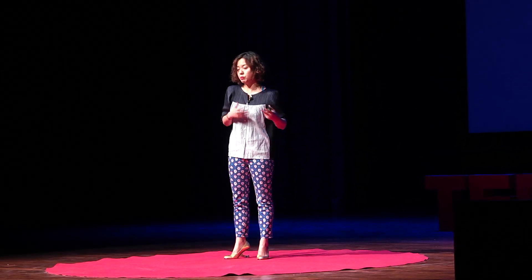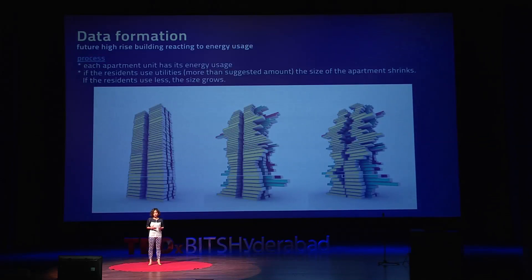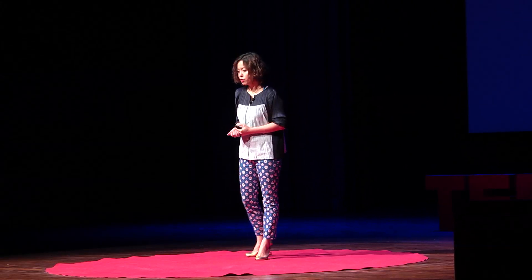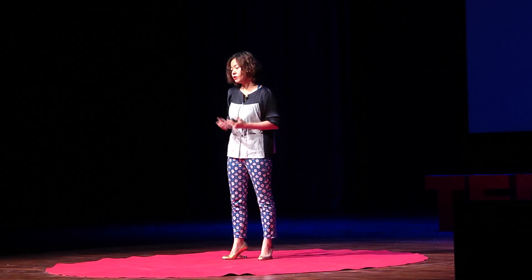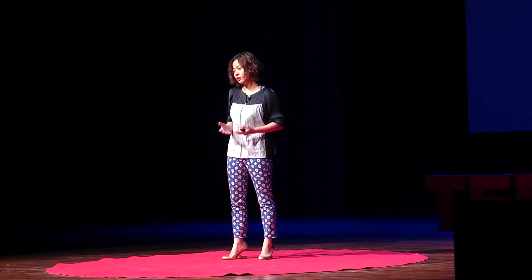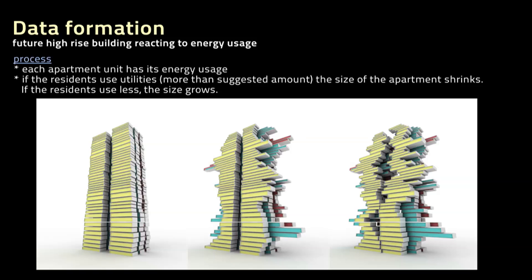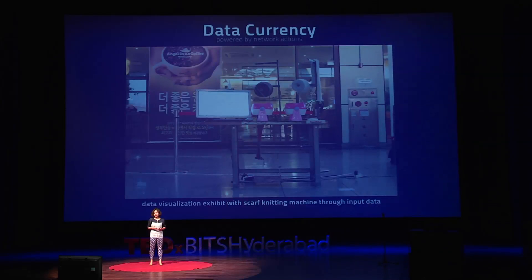So the public and the residents would notice easily about their energy usage habits by the size of the unit and also by the shape of the apartment. And after that, I was trying to physically depict our network activities. We do Facebook, Google, and Twitter every single day, which means we are giving our physical energy towards data. So Data Currency is the leading system that converts our network activities into physical energy.